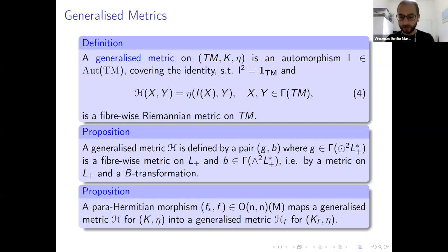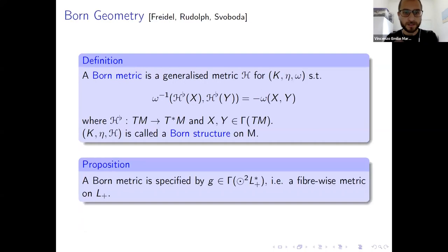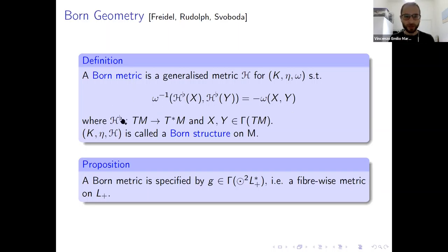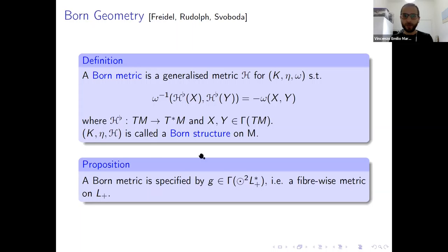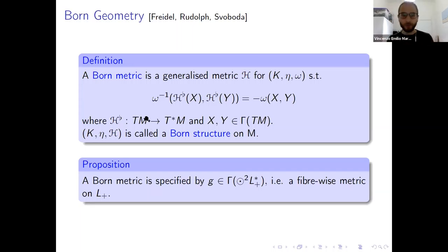This is almost all we need to define our Born sigma model. The last step is introducing a Born geometry. A Born geometry is defined by a Born metric, which is a generalized metric H satisfying a specific compatibility condition. In my notation, H♭ is the musical isomorphism between TM and T*M induced by the Riemannian metric. This condition means that when we think of a Born metric as a generalized metric associated with a pair (g, b), a Born metric is associated only with g and not with a two-form b — this condition kills everything that is off-diagonal in the block representation of the metric H for each component such as L+ ⊗ L+ and so on.